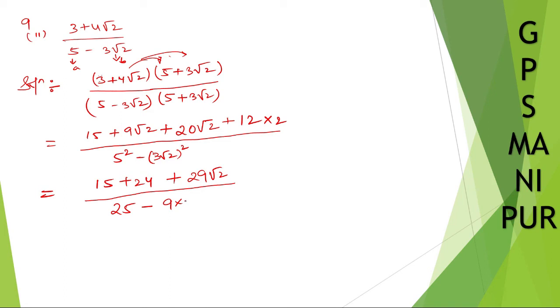Into 2, root 2 and square. Root, root cancel. Root and square cancel. So it will be 2. This number I can write as 15 plus 24, which is 39 plus 29 root 2 divided by 25 minus 9 times 2 is 18. So 25 minus 18 is 7. I can write 39 plus 29 root 2 divided by 7.